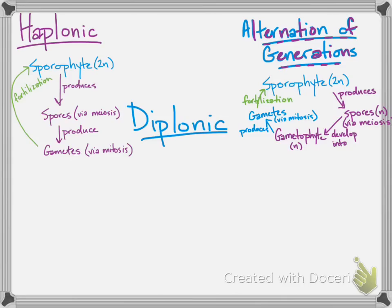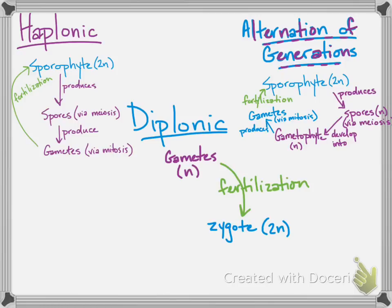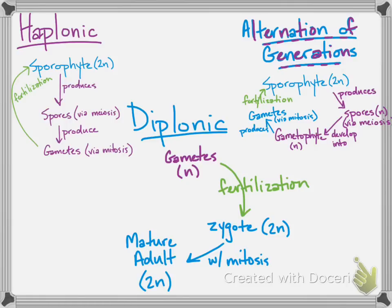And finally, the diplonic life cycle, which is the cycle of humans and other animals and many of the seed-bearing plants. Only the gametes produced by meiosis are haploid. After fertilization, a zygote forms and develops into a mature diploid adult, and that's all done through mitosis. Since all animals are diploid, they should have an even number of chromosomes, because you have to multiply by two. So we have 23 pairs of chromosomes for a total of 46.